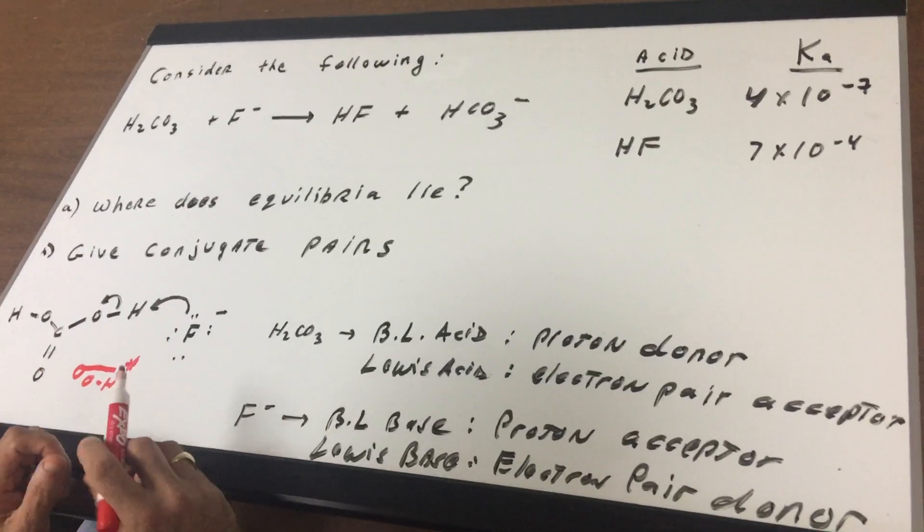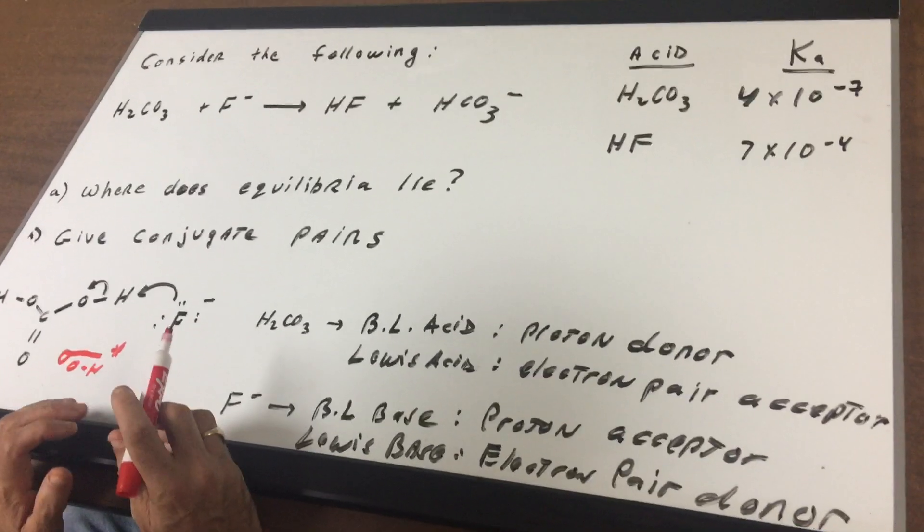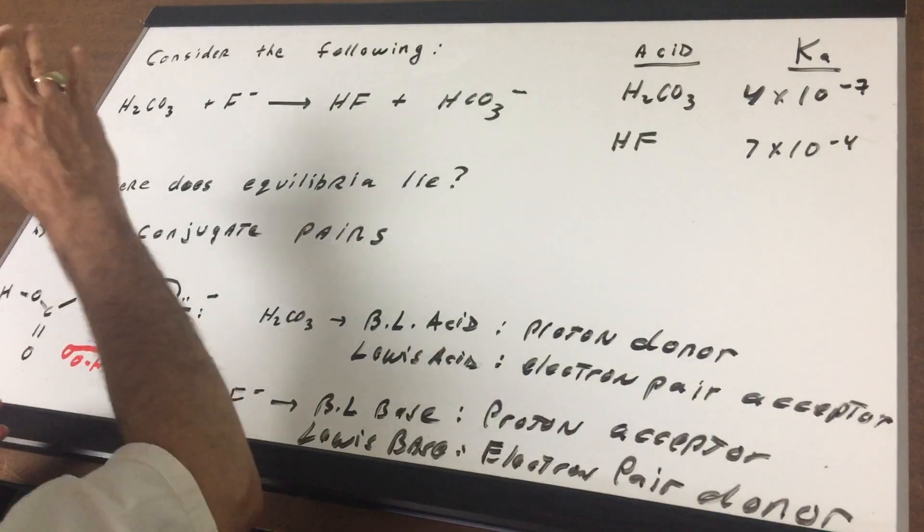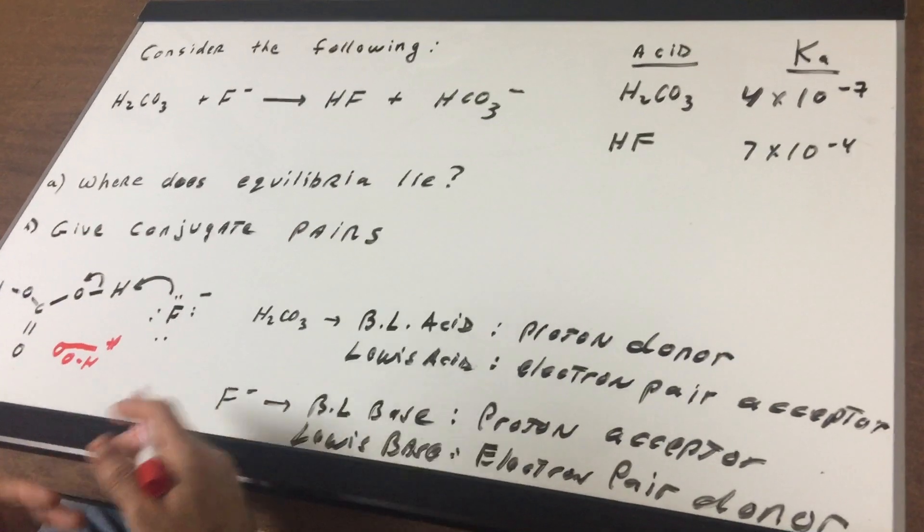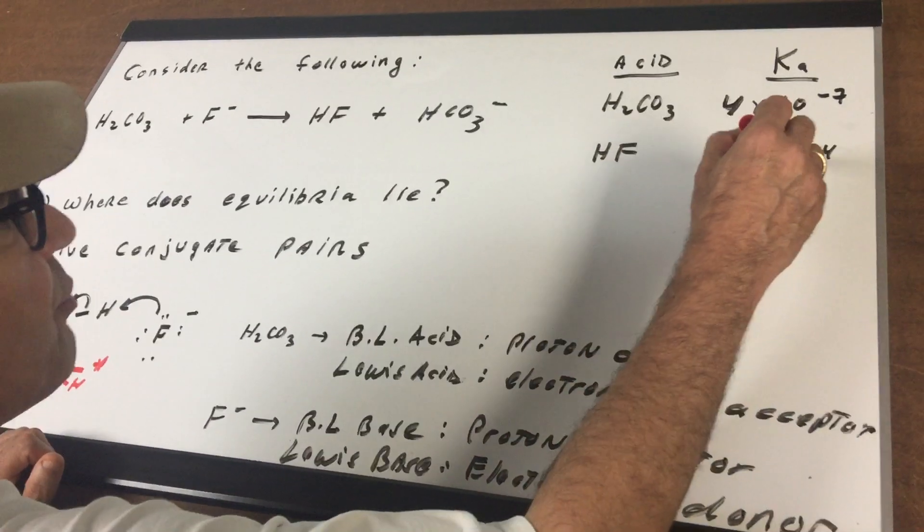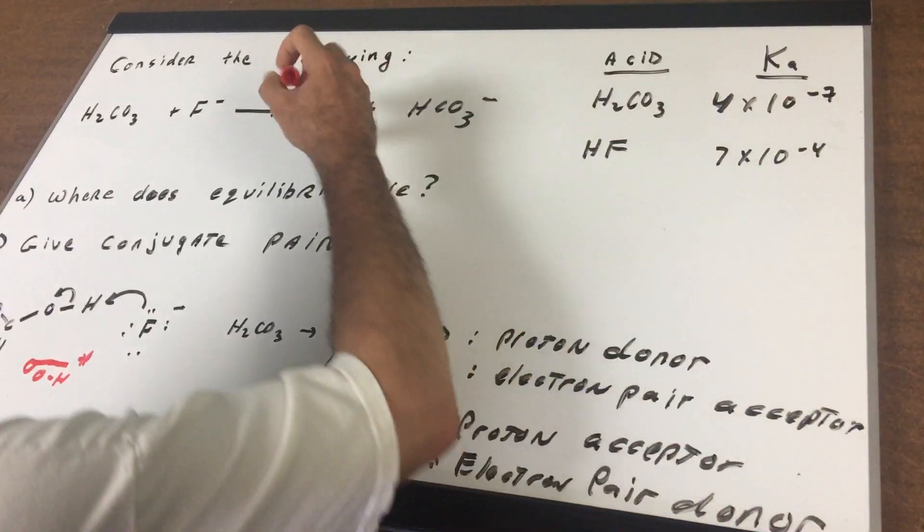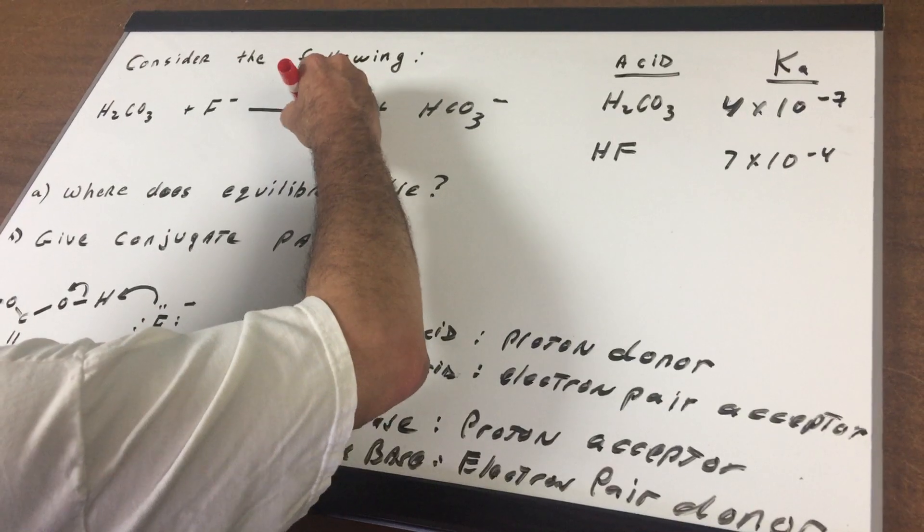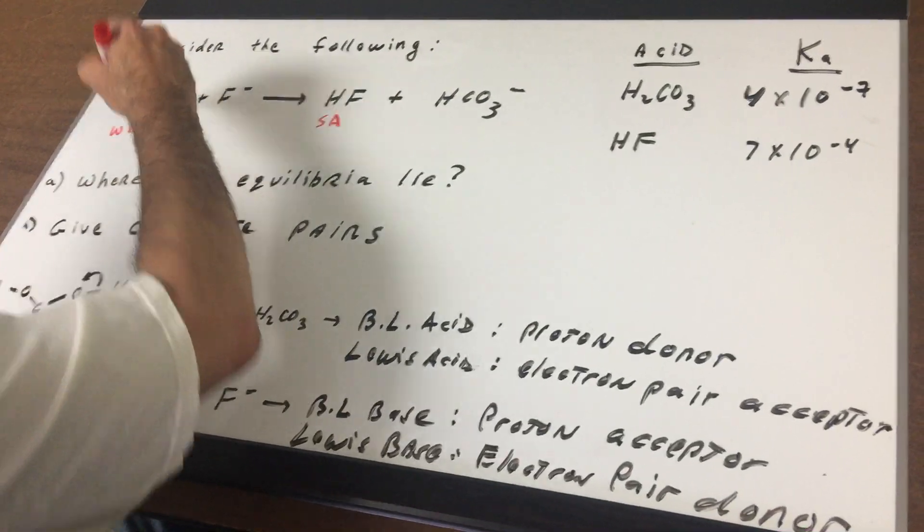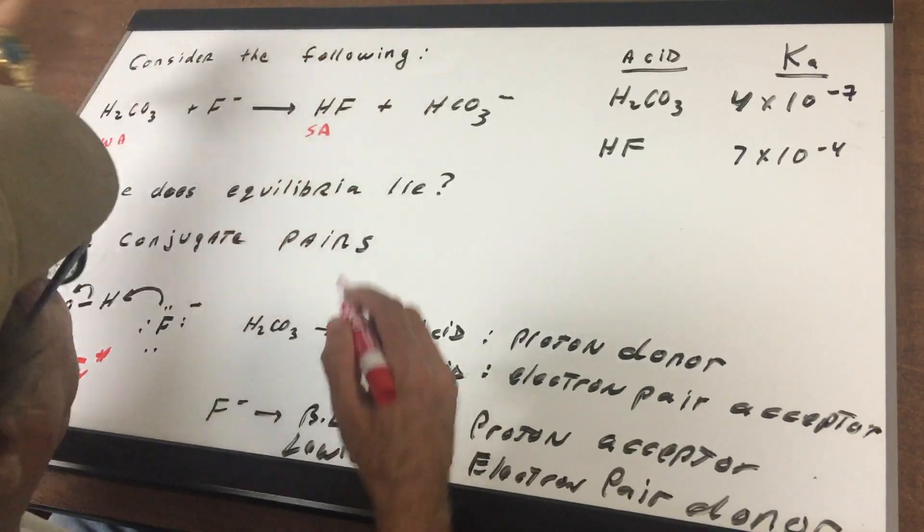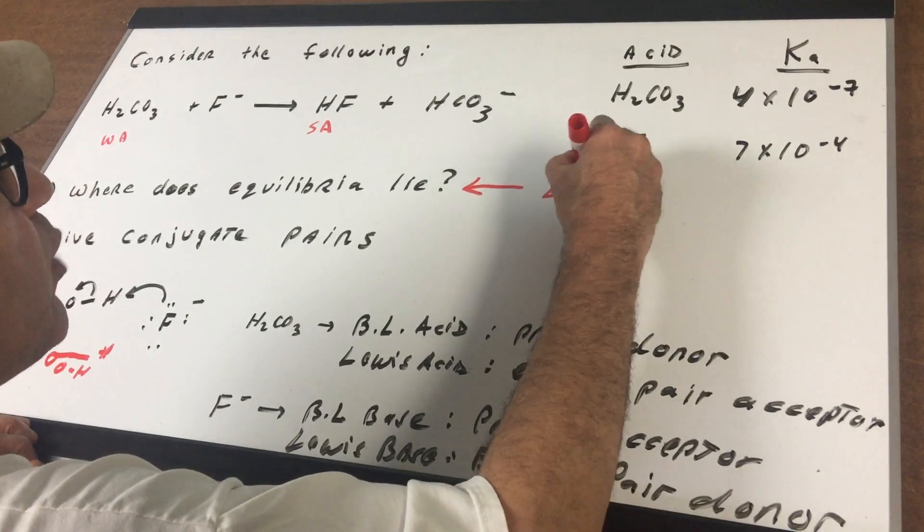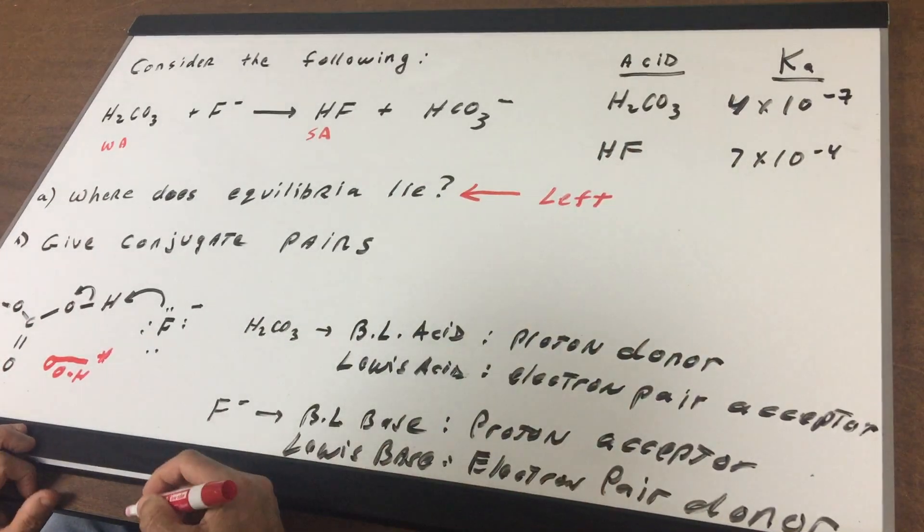And I want to know where does the equilibrium lie? Well, what's the concept? The concept is you always go from the strong acid towards the weak acid or strong base to weak base. Now, this is the bigger number, so that means that this would be the strong acid and this would be the weak acid. So you always go from strong to weak, so that means the equilibrium would lie to the left.